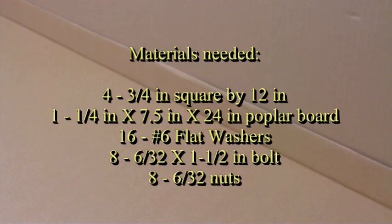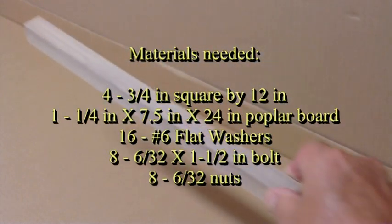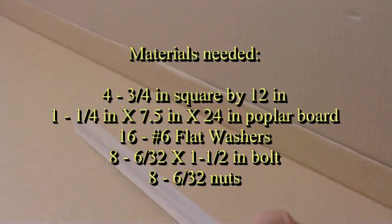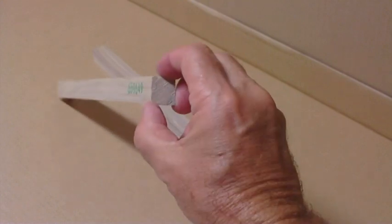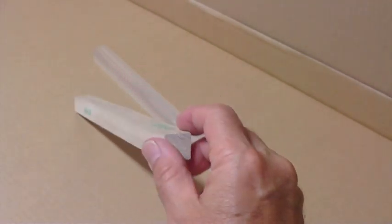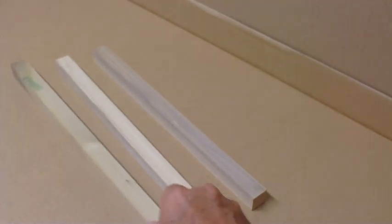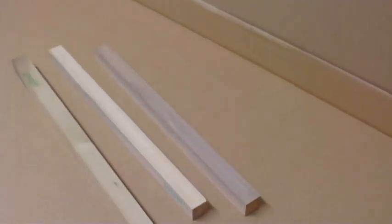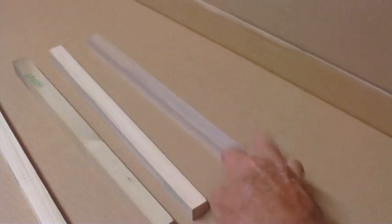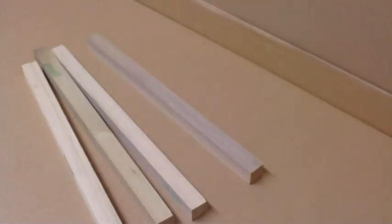These are the pieces you need to build the quadcopter frame. Four of these hardwood pieces I picked up at the local Home Depot, three-quarter inch square by 12 inches, and a piece of poplar seven and a half inches by 24 inches.